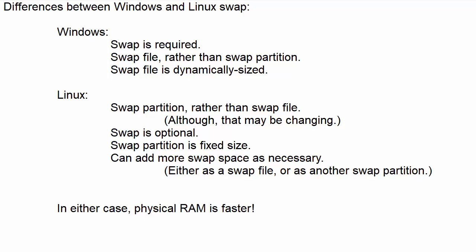With Linux, swap space is optional. If you've got plenty of RAM on your machine and you don't need swap space, you can set your machine up without it. With Linux, the swap partition is a fixed size — it will not grow and shrink as needed. But you can add more swap space as necessary: you can either create a swap file on the main file system, or add a drive and set up another swap partition. In either case, physical RAM is faster, so add RAM if you have the choice.